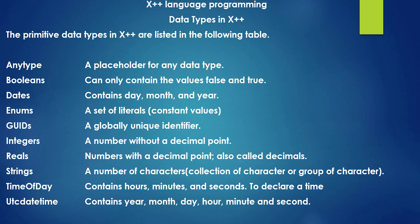In X++ we call them Reals, but in other programming languages like Java or C# we call them decimals. The next data type is Strings, a collection of characters or a group of characters.